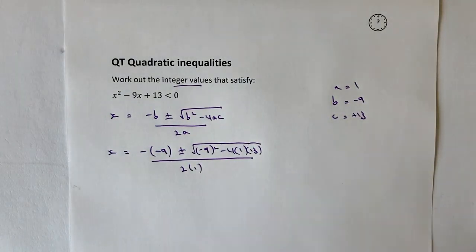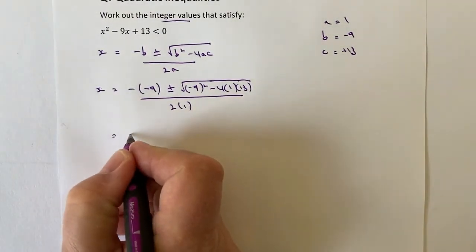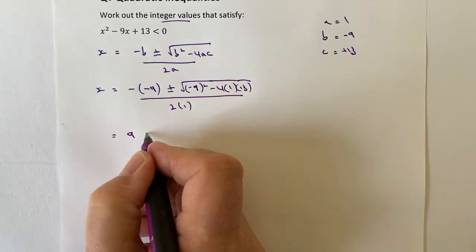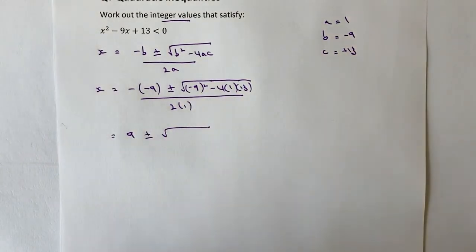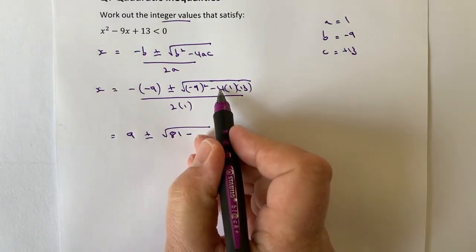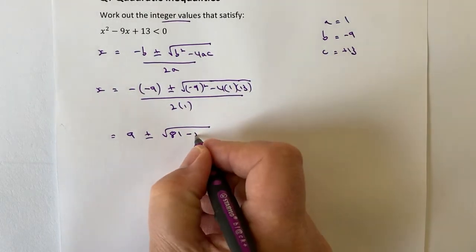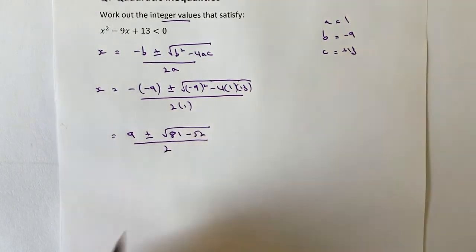Let's work through this a little bit more. I've got minus minus 9, which is positive 9, plus or minus. What I tend to do with this, it's called the discriminant, is treat it as two separate calculations. Minus 9 squared is the same as minus 9 times minus 9, which is 81. Then I've got minus 4 times 1 is 4, and 4 times 13 is 52, so it's minus 52, all divided by 2.